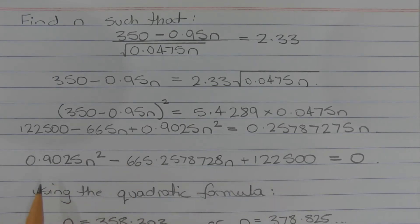Moving everything to the left-hand side to form a quadratic equation, we get 0.9025N squared minus 665.2578728N plus 122,500 equals 0.